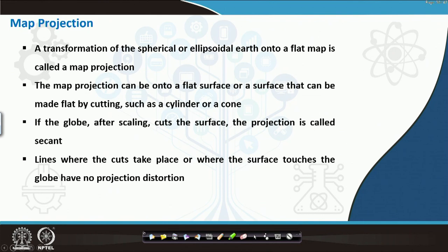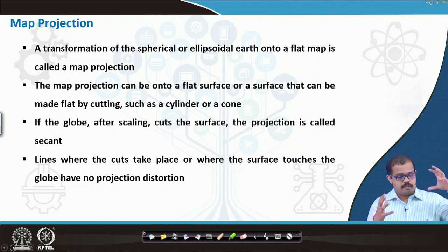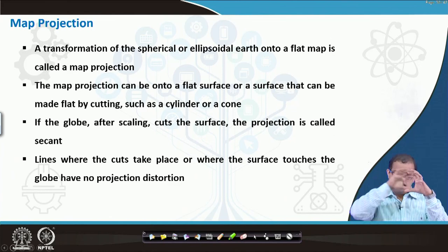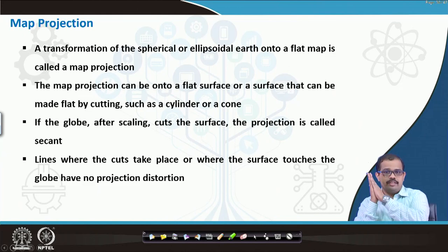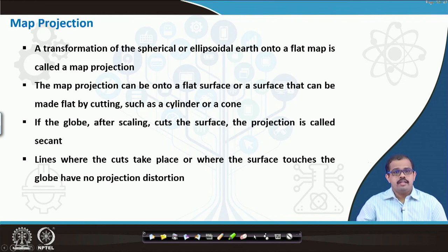When I say map projections, it is a transformation of a spherical — the earth as a spheroid or ellipsoidal earth — into a flat map. If I project a light here, the light that projects on the earth surface onto the paper surface is nothing but your map. That is from a 3D surface to a 2D surface using different systems, which is nothing but a projection.